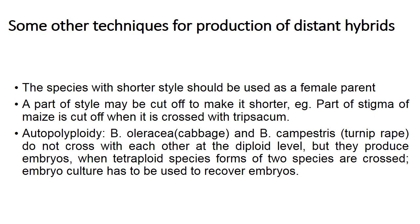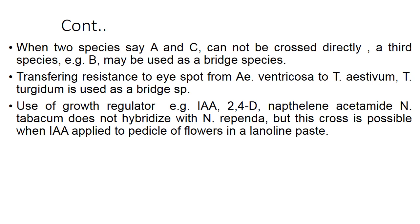When tetraploid forms of two species are crossed, embryo culture is used to recover embryos. When two species A and C cannot be crossed directly, a third species is used — the bridge species crossing technique. For example, to transfer resistance to eye spot from Aegilops ventricosa to Triticum aestivum, these two cannot be crossed directly, so Triticum turgidum must be used as the bridge species.